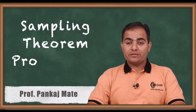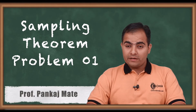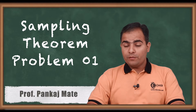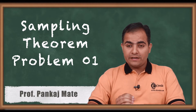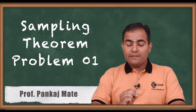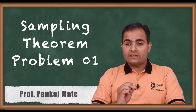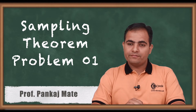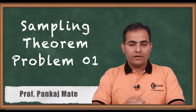Hello friends, today we are going to study a new problem — problem number one — which is based on a sampling theorem. Before moving to this problem, you should know the statement of the sampling theorem: sampling is possible when your sampling frequency is greater than or equal to twice of fm, that is the maximum or modulating frequency.